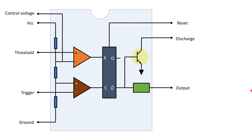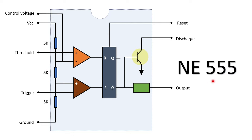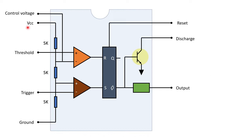The voltage divider circuit is made up of three 5kΩ resistors, which is why it is named IC555. The voltage divider is connected to VCC and ground. Point A and B are connected to the threshold and trigger comparator respectively. These comparators are made up of ideal op-amps, and that is why we can assume there is no current flow through the comparator.